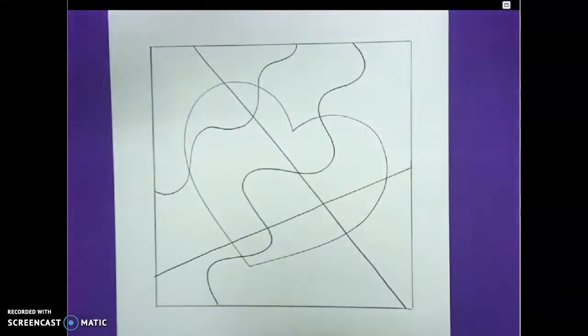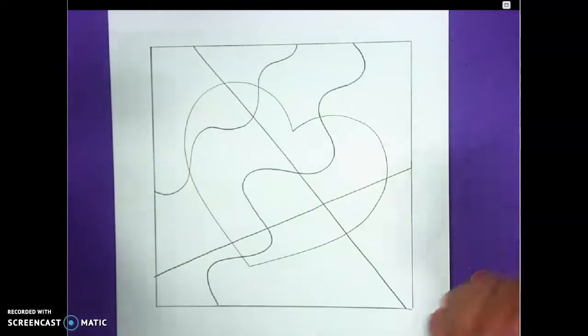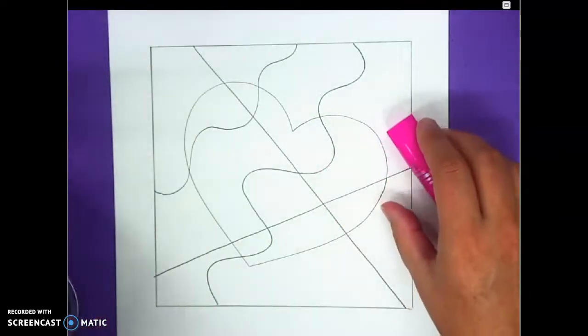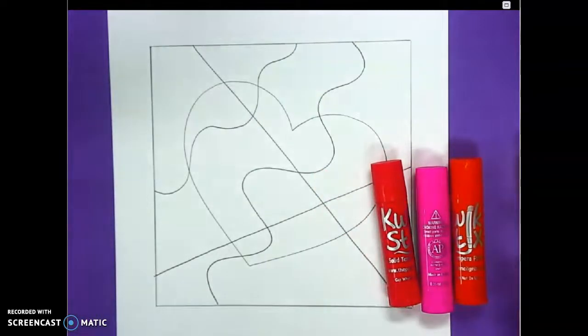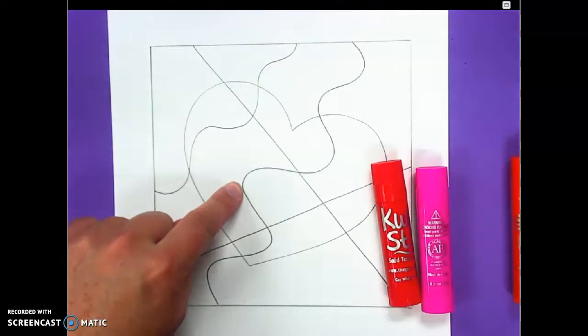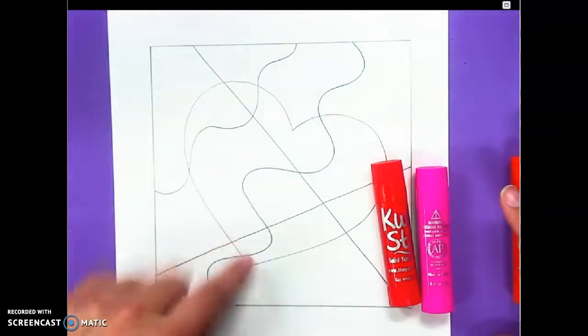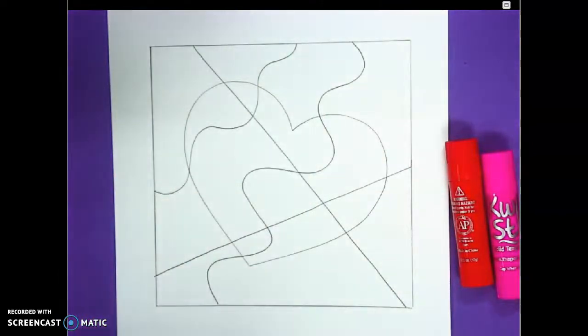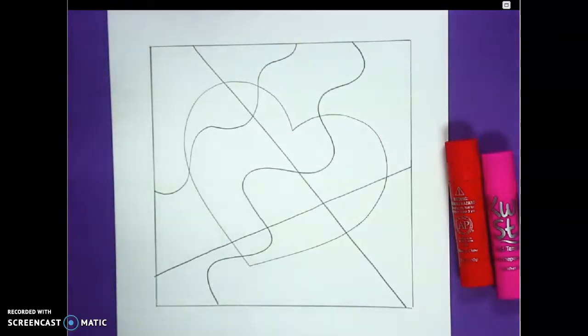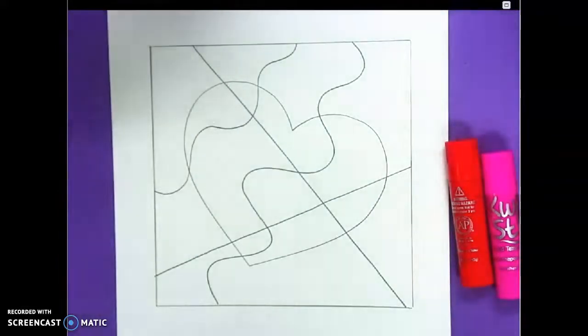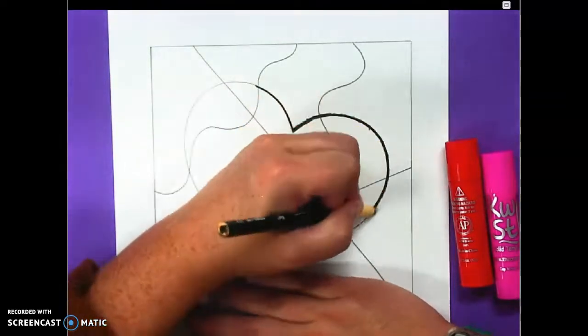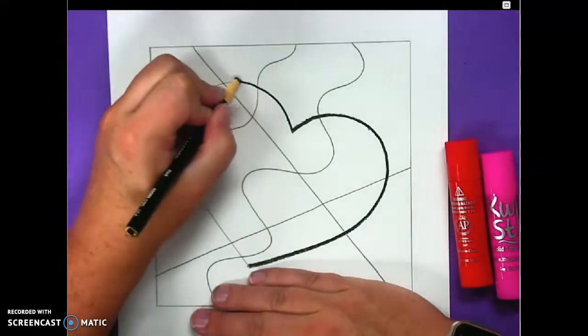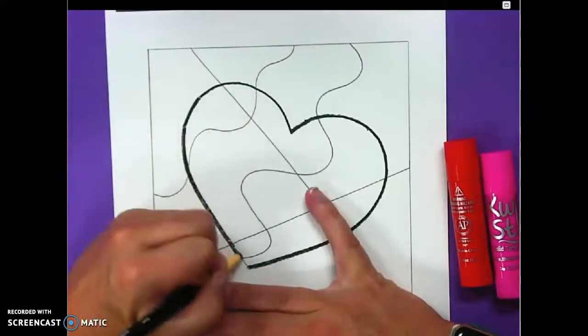To add color we are going to use these amazing quick sticks and you're going to choose one color family at a time. I'm going to start with my warm colors. I'm going to put my warm colors inside my heart so I'm not going outside my heart line. If this is a little confusing for you it might be helpful to get out a sharpie or a china marker and trace that heart line so you know where you're keeping your colors inside of. Remember we only get one paper so going slow is really important.